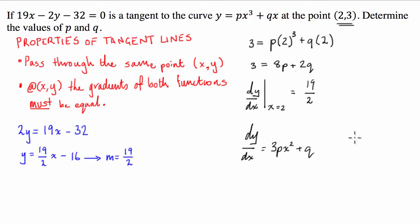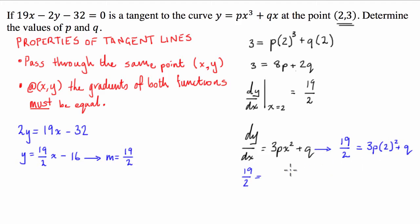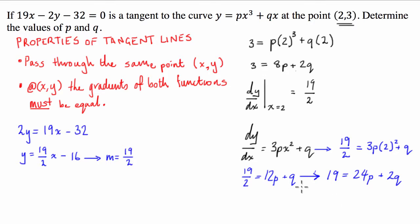Substituting x equals 2 and setting the derivative equal to 19/2: 19/2 equals 3p times 2 squared plus q, so 19/2 equals 12p plus q. Multiplying both sides by 2 gives us our second equation: 19 equals 24p plus 2q.